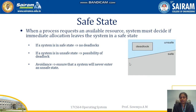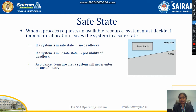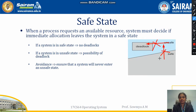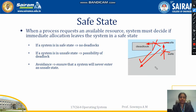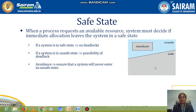A safe state is a condition where the execution of a process never goes into a deadlock situation. If the process under execution moves to an unsafe state, there is a higher chance of deadlock. You have to avoid a process entering into the unsafe state, and if a process does go to an unsafe state, bring it back to a safe state. If your process is in a safe state, there is little to no chance of it entering deadlock.